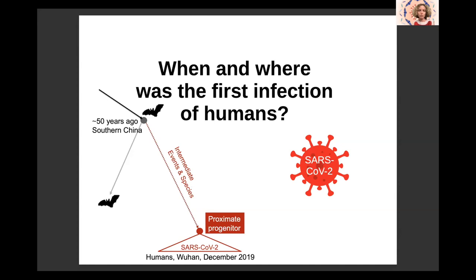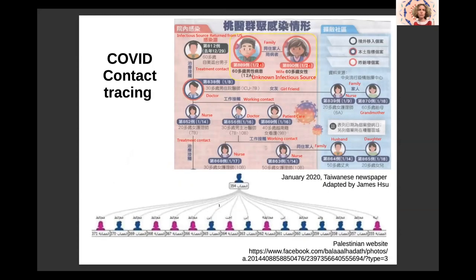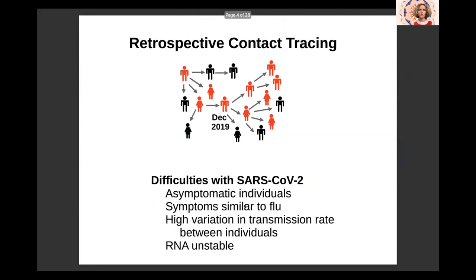What is important is to try to go back in time and look at the first infection of humans that we can detect. To do this, what we need to do is contact tracing, and this is what people have been doing all over the world — here you can see examples from Taiwan or from Palestine. In our case, what we need to do is called retrospective contact tracing. We have to look at the earliest cases, go back in time, find the people they were in interaction with, and see whether they were infected by COVID. The difficulty with retrospective contact tracing with SARS-CoV-2 is that there are asymptomatic individuals, so the chain of symptomatic individuals is broken by asymptomatics, making it difficult to reconstruct the chain.